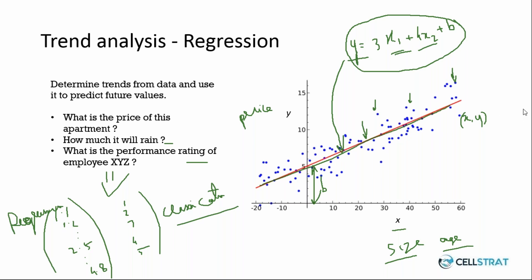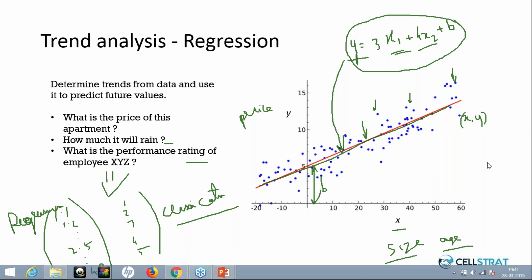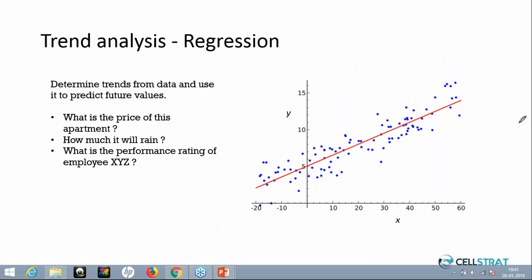We have to look at the use case and problem statement to determine whether to apply a classification algorithm or a regression algorithm. The difference between regression and classification should be clear: regression applies to continuous output distributions, while classification applies when there are distinct output classes.